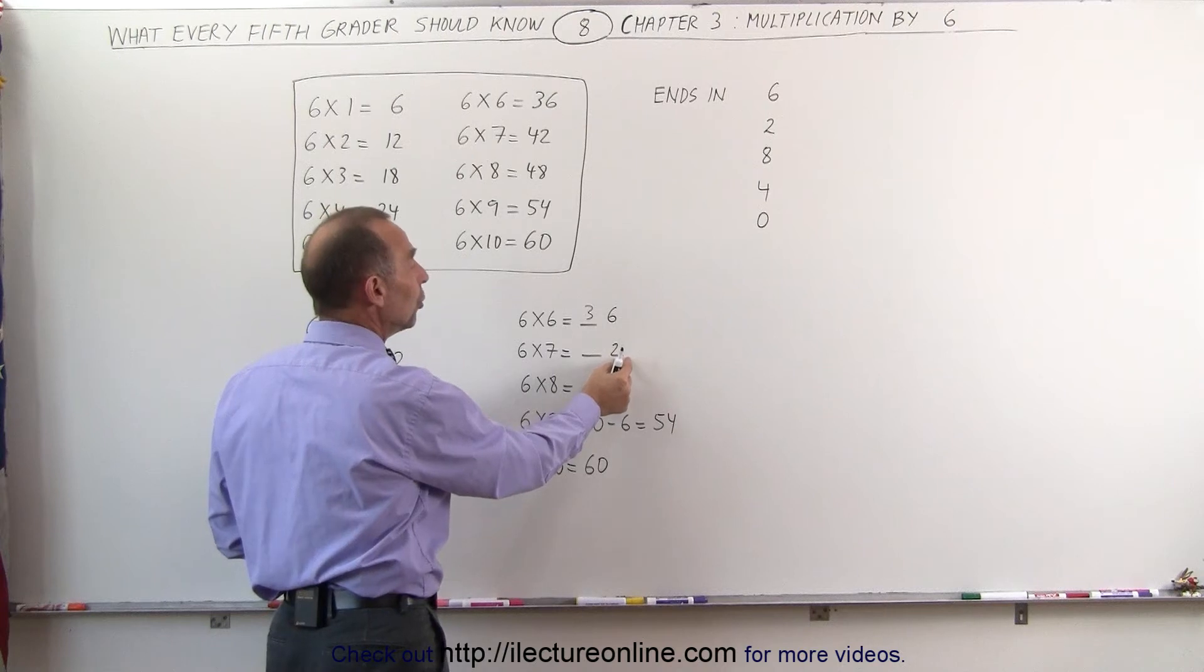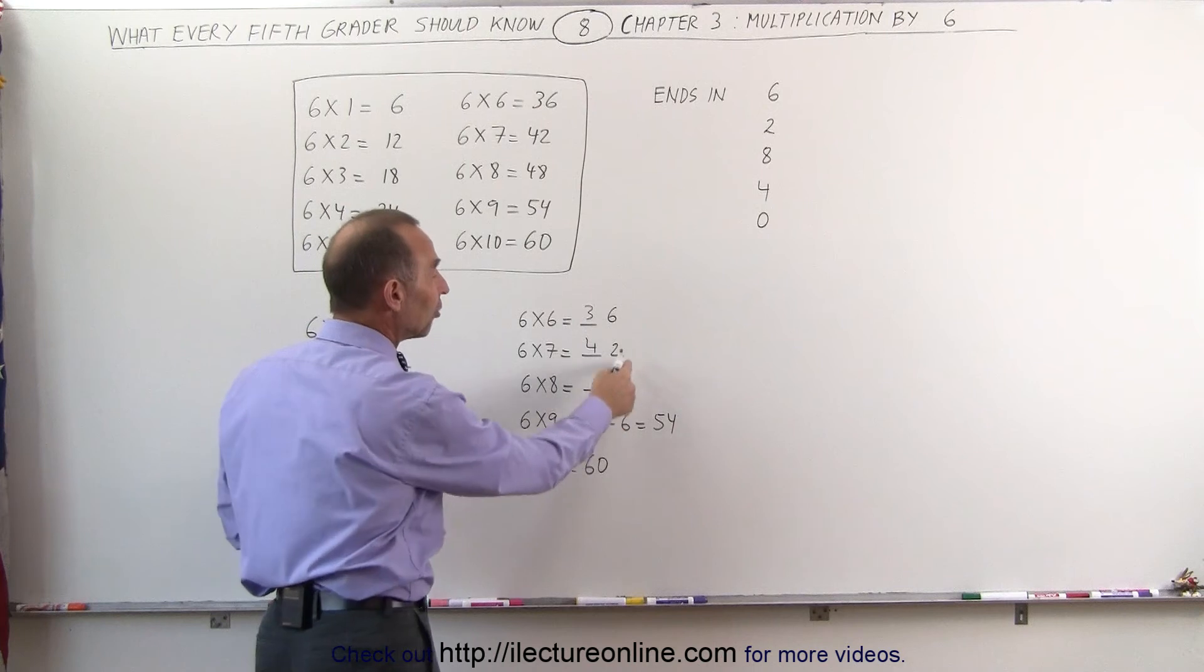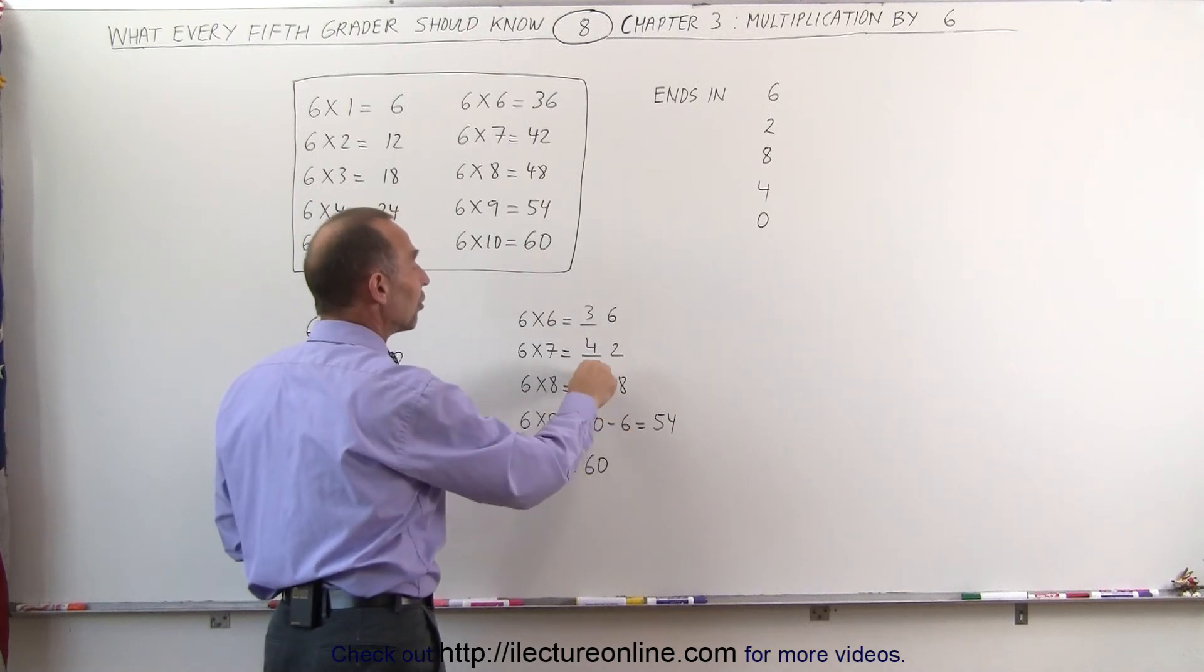The next one needs to end in a 2, and I know that by then you're in the 40s, so this becomes 42. And then you add another 6 to the 2, you get an 8, you're still in the 40s.